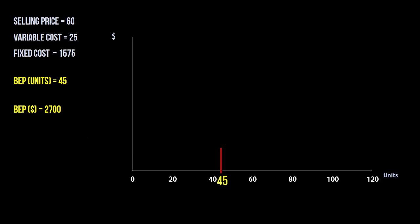And for dollars, I can do a thousand per unit here to ensure the breakeven dollars of 2700 is captured. So the breakeven point here is 45 and 2700.